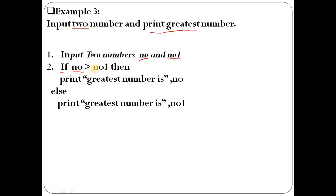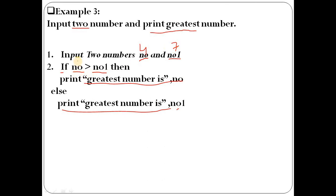Check which number is greater using a conditional statement. If 'No' is greater than 'No1', then the true part executes and the greatest number is 'No'. Otherwise, we go to the else part and the greatest number is 'No1'. For example, if No is 4 and No1 is 7, the condition 'No greater than No1' is false, so the else part executes and No1 (which is 7) is the greatest.